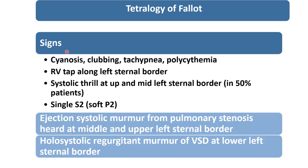In signs of TOF, patient will have cyanosis depending on degree of PS, clubbing later on, dyspnea, polycythemia, RV tap along the left sternal border because of right ventricular hypertrophy. Systolic thrill at the upper and mid left sternal border because of PS in 50% of patients. Single S2, soft P2 because of PS.